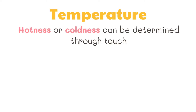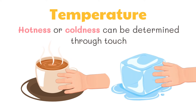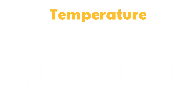Through the sense of touch we can determine whether an object is hot or cold. For example, when we touch a cup of coffee we can feel that it is hot. On the other hand, when we touch an ice cube we can feel that it is cold. However, this method is not accurate. A tool used in measuring temperature is the thermometer.